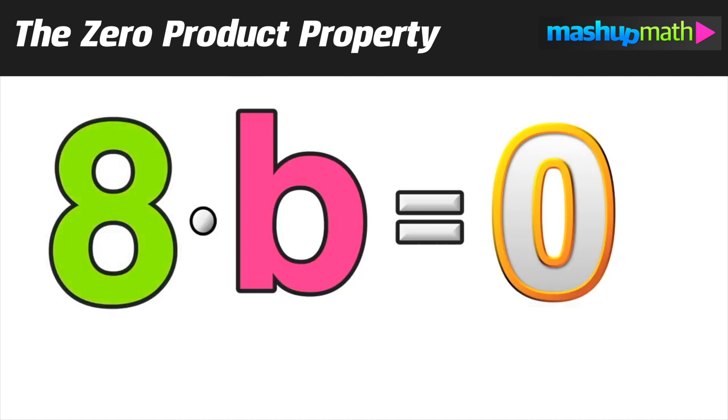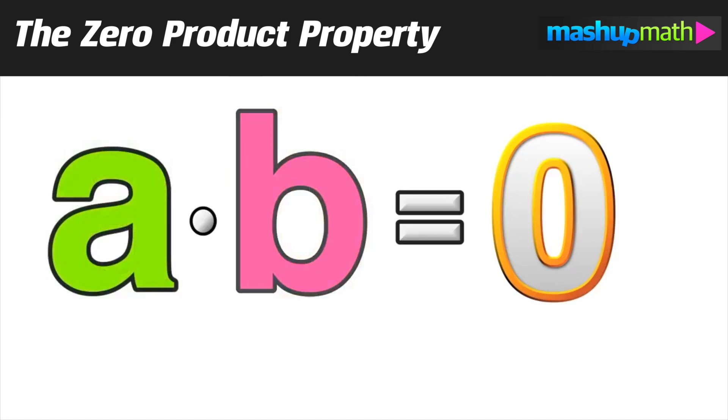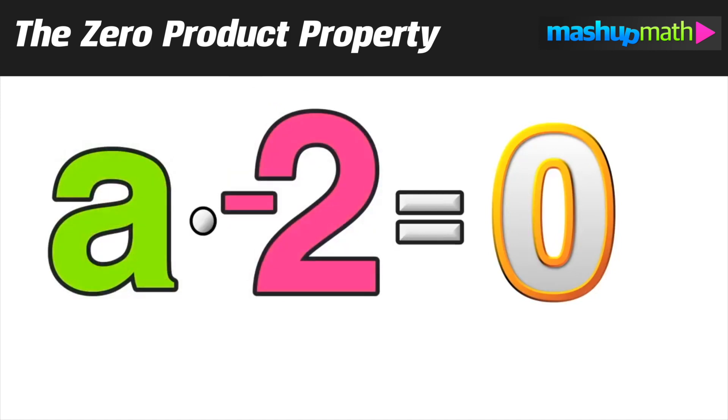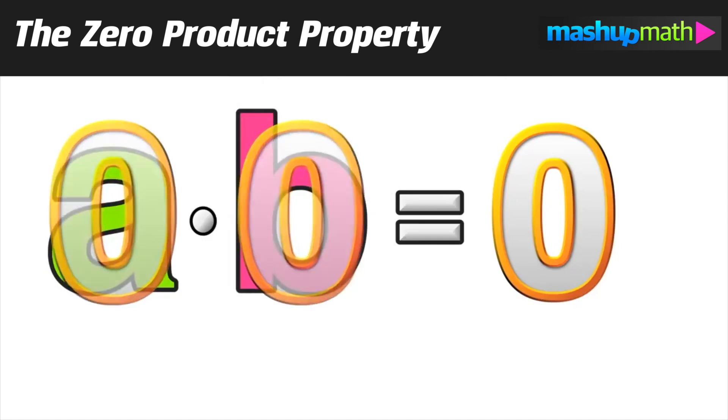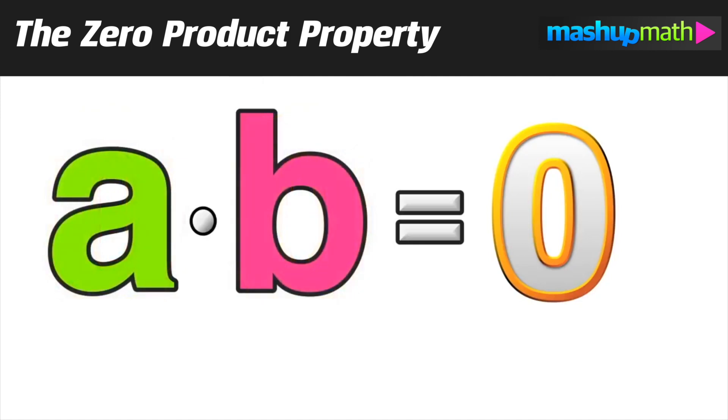So, if a was equal to eight, then b would have to equal zero by the zero product property. Or, if b may be equal to negative two, then a would have to be zero by the zero product property again. Of course, it's also possible that both a and b equal zero, since zero times zero still equals zero.